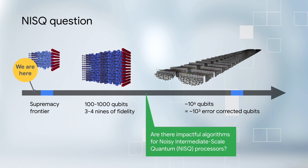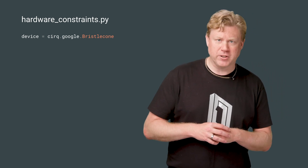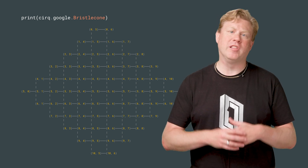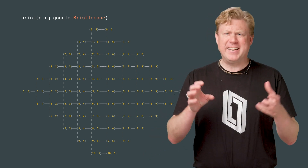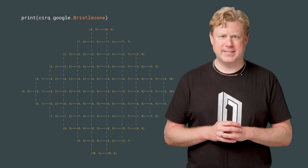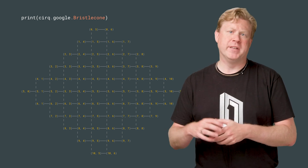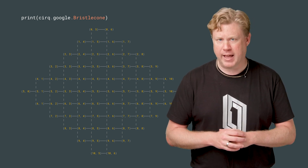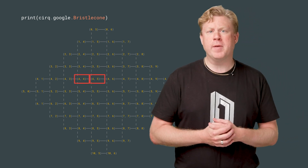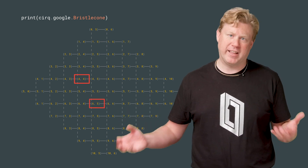In CIRQ, this is captured by device objects. Here is the device object for our Bristlecone device, which gives a representation of the layout of the qubits on the device. We see that it is a strange grid of qubits, with the qubits represented by pluses. The lines between the qubits represent the fact that only adjacent qubits can be subjected to a two-qubit gate. For example, we can perform a two-qubit gate between adjacent qubits, but not those which are too far apart to directly interact.